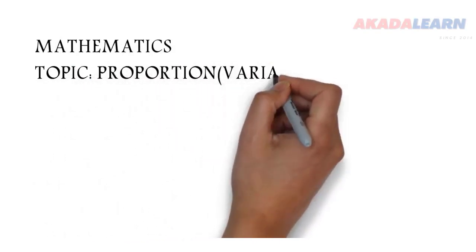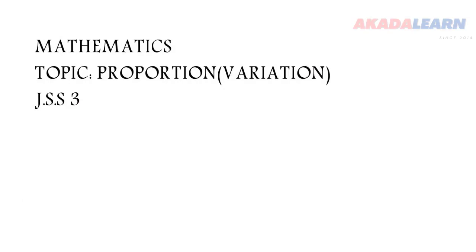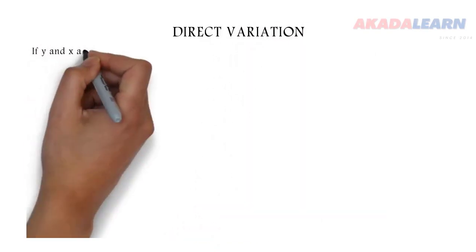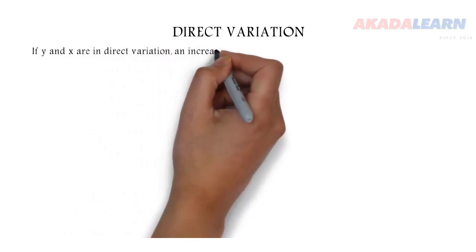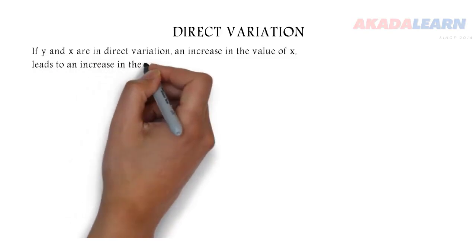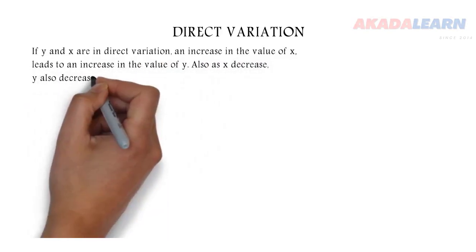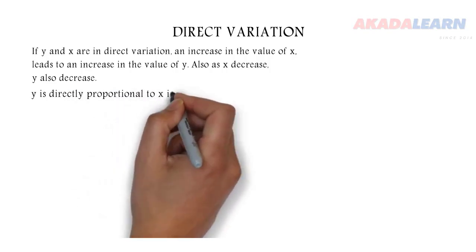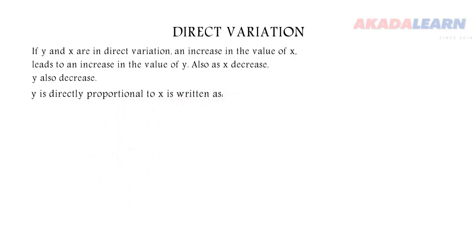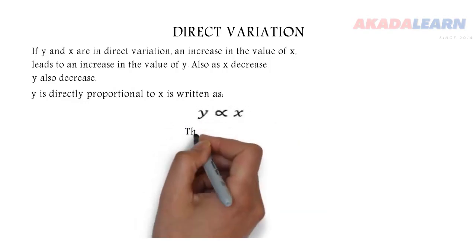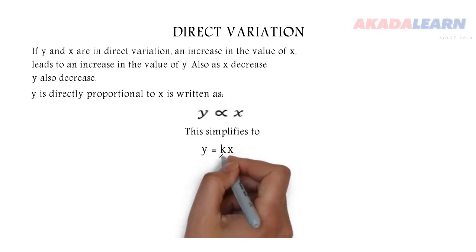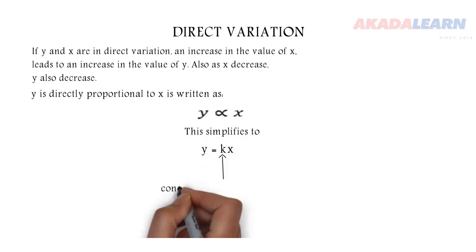Welcome to class. Today we are going to be seeing the topic proportion or variation. First, let's see direct variation. If y and x are in direct variation, it means that an increase in x leads to an increase in y, and a decrease in x leads to a decrease in y. Y is directly proportional to x, and we introduce the constant of variation k, so y is equal to kx.